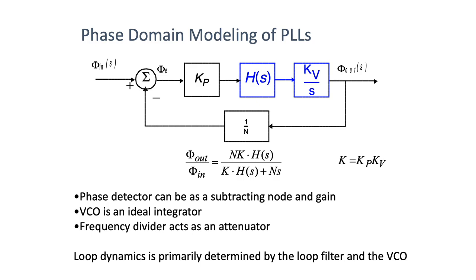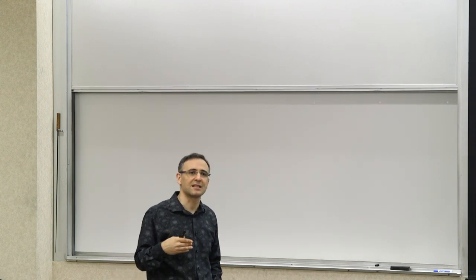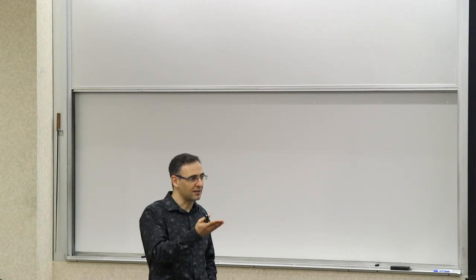The error phase goes through what we call the gain of the phase detector, which has units of voltage or current divided by radians — it converts the phase difference to a voltage or current. That goes through a filter H(s), and then through the VCO. The VCO is represented as K_V divided by s. Why divided by s? Because the VCO acts as an ideal integrator as far as the phase is concerned. The impulse response of the VCO — input voltage versus output phase — was shown to be a step, and a system with a step impulse response is an ideal integrator.